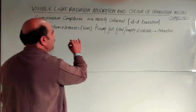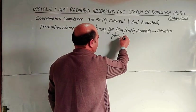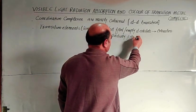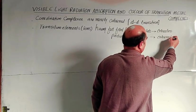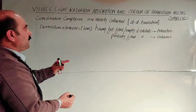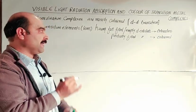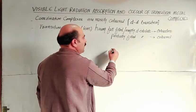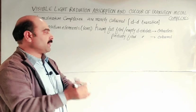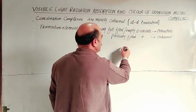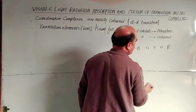Transition elements or transition metal ions having partially filled d-orbitals, they will be colored because d-d transition can occur. The visible range is 400 nanometer to 800 nanometer. Visible light, white light, is the combination of seven colors.